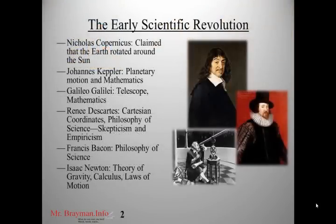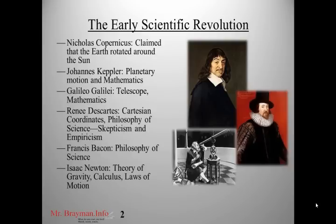First let's take a look at the early scientific revolution with a rundown of the major figures of this time period, so you can get a sense overall of what the major scientists were doing. The first was Nicholas Copernicus, who made the claim that the Earth rotated around the Sun. Johannes Kepler discovered further principles of planetary motion and made major advancements in mathematics. Galileo Galilei developed the telescope, further mathematics, and did a lot of work with planetary motion as well.